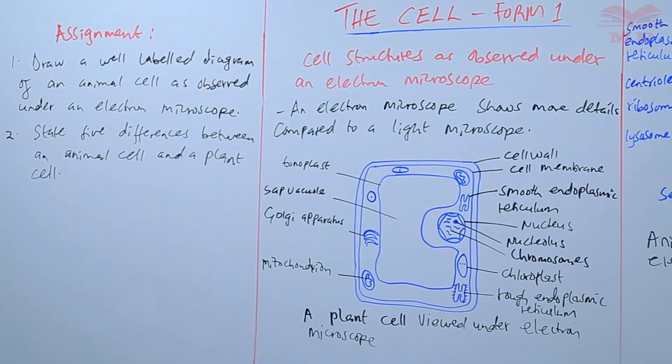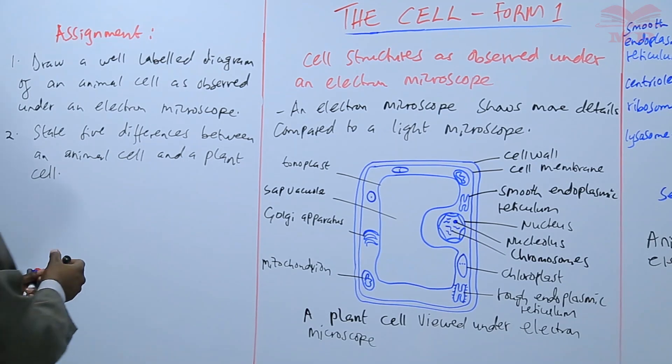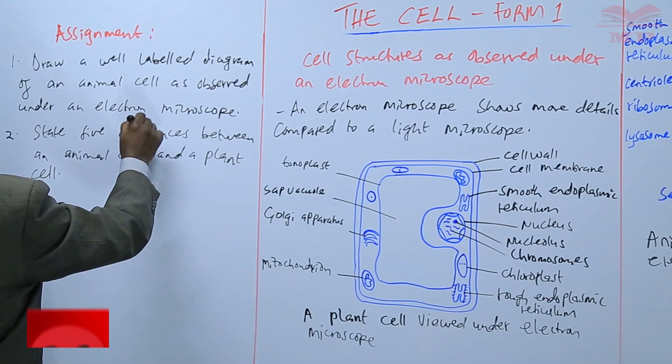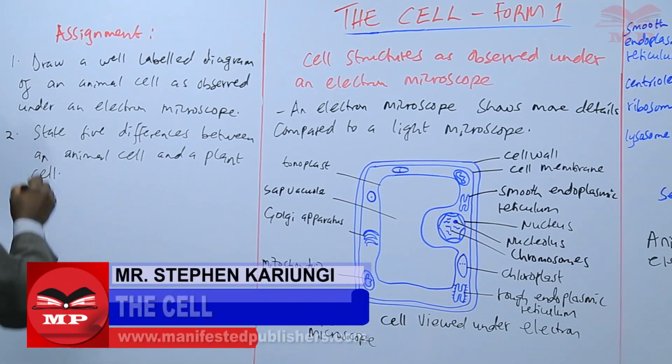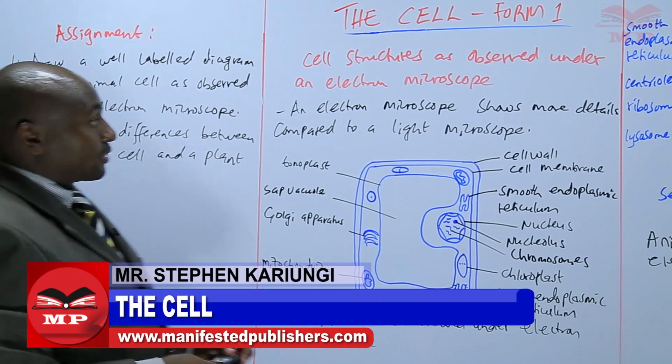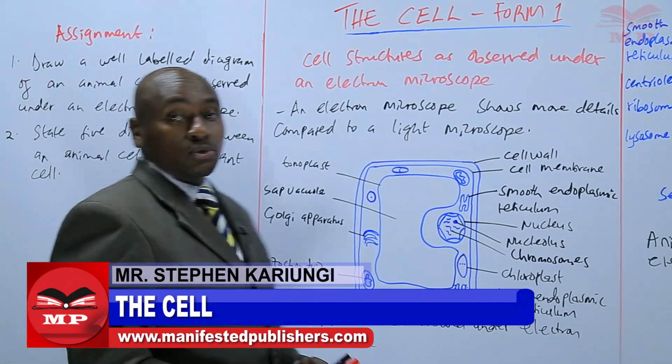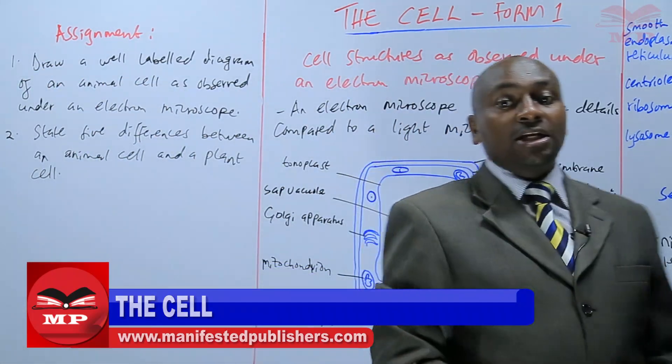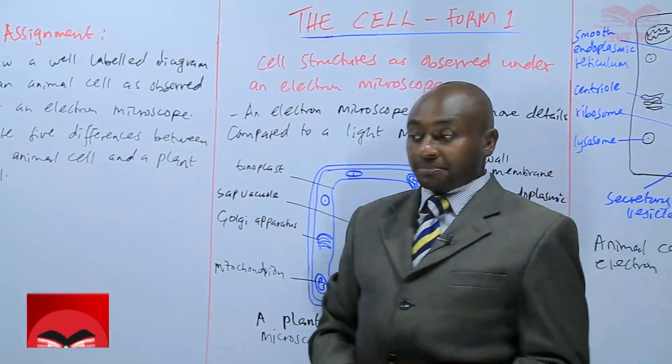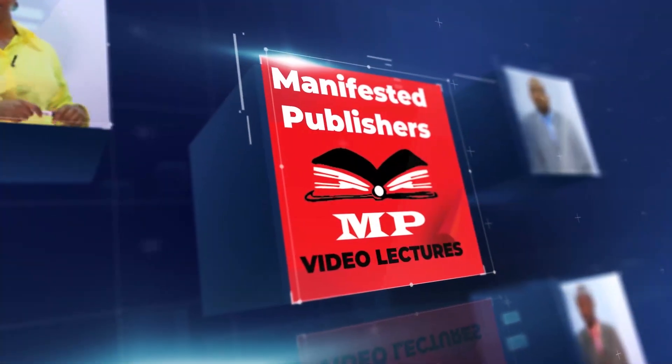The first question: draw a labeled diagram of an animal cell as observed under an electron microscope. Number two: state five differences between an animal cell and a plant cell. The differences can be picked from the two diagrams. We are going to stop there until next time. Goodbye.